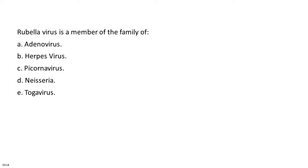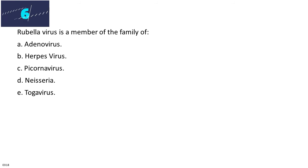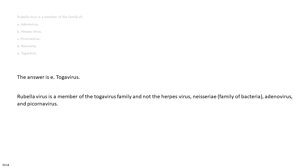Rubella virus is a member of the family of: A. Adenovirus. B. Herpesvirus. C. Picornavirus. D. Coronavirus. E. Togavirus. The answer is E. Togavirus. Rubella virus is a member of the togavirus family and not the herpesvirus, Neisseriaceae bacteria, adenovirus, or picornavirus families.